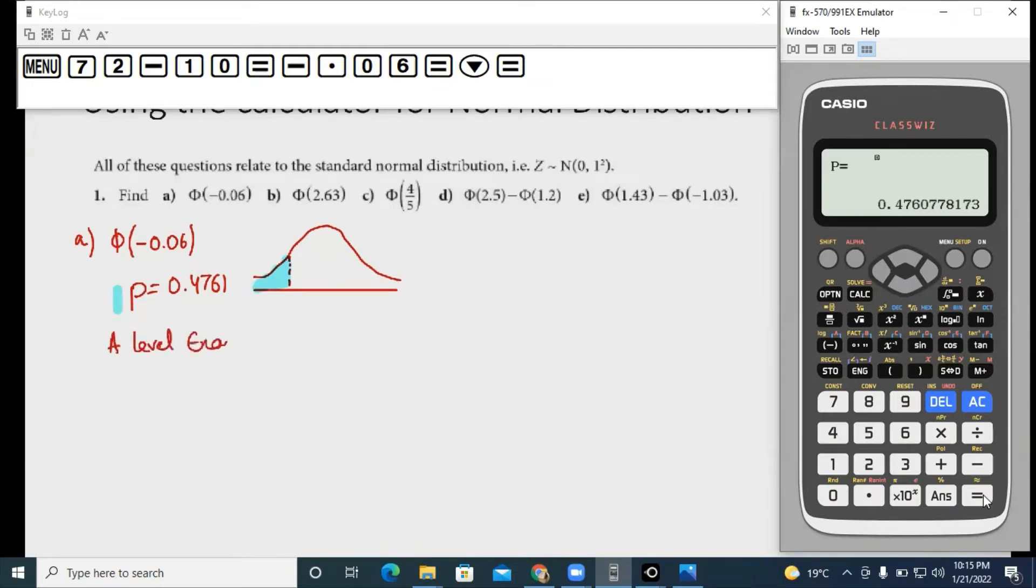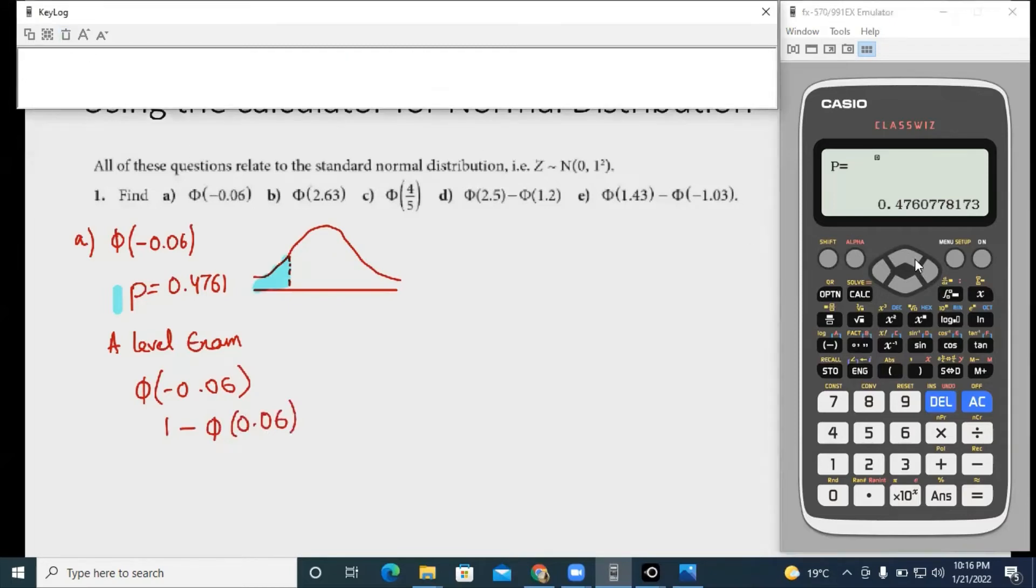So on your exam what you need to do is first you need to convert this into a positive value of phi. And then what you're going to do on your calculator is again go to menu, go to 7 where normal CD is minus 10, and instead of minus 0.06 you now put 0.06 because you need to show me a sufficient amount of working on your A-level exam.